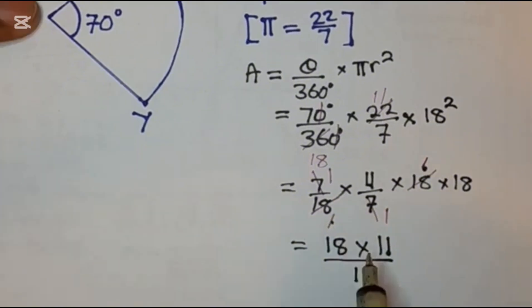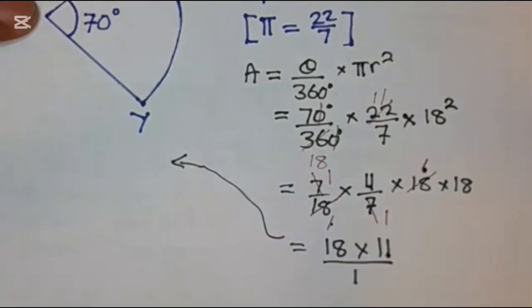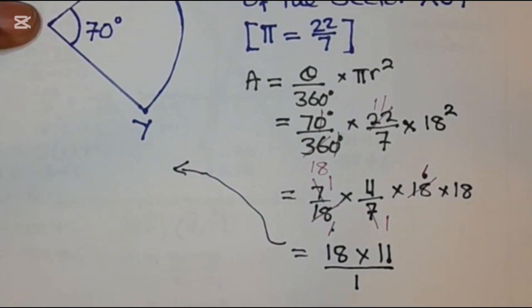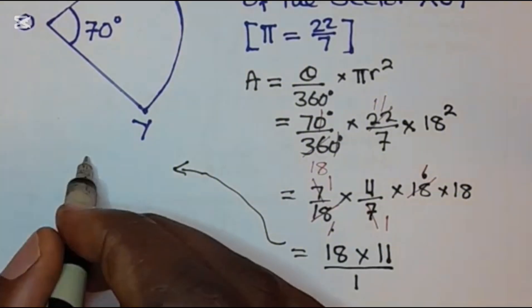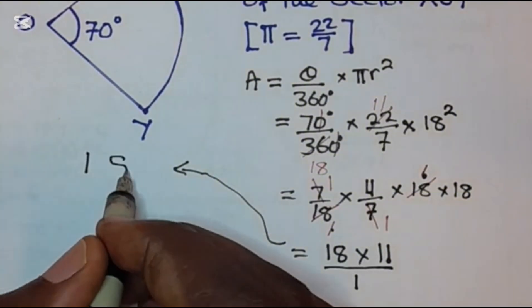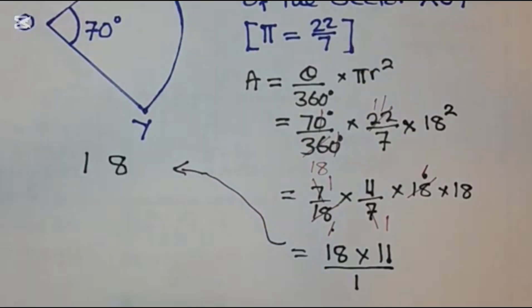Because this is paper 1, let me just solve it from here for the sake of space. Since you are not allowed to use a calculator, you can just multiply them like this: 18 times 11.